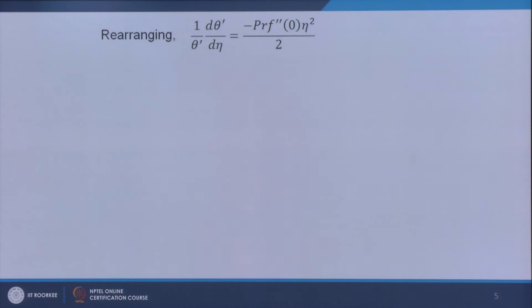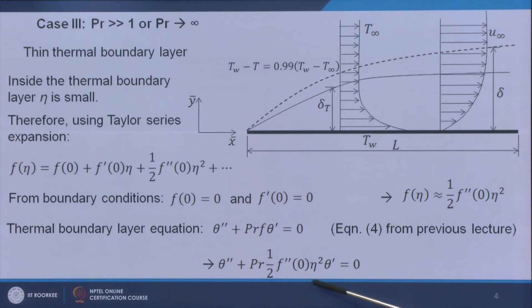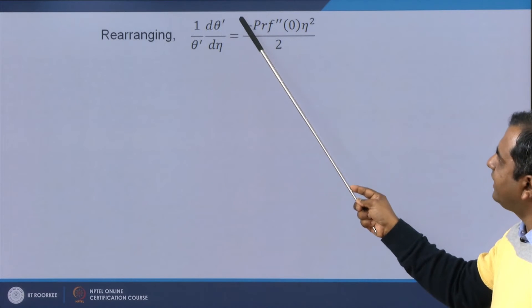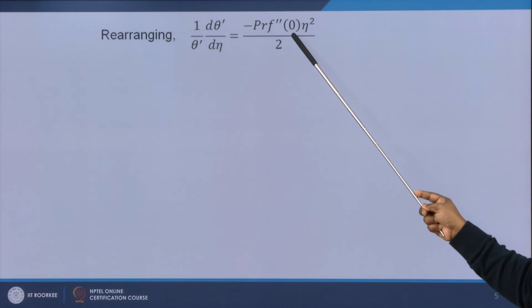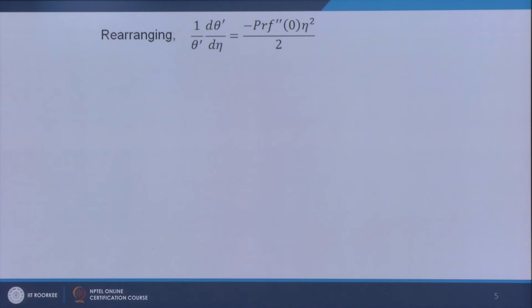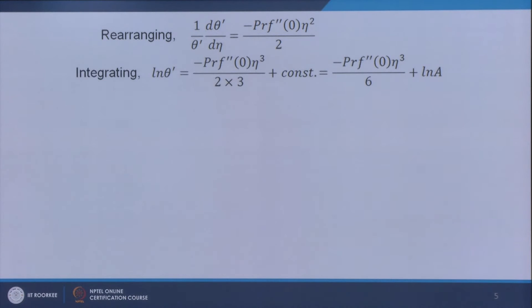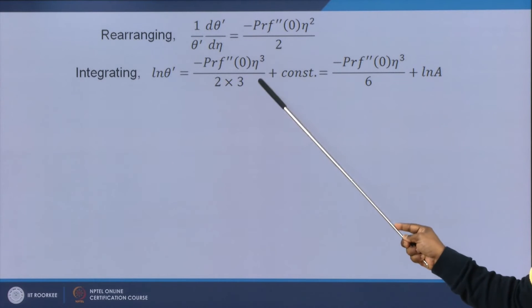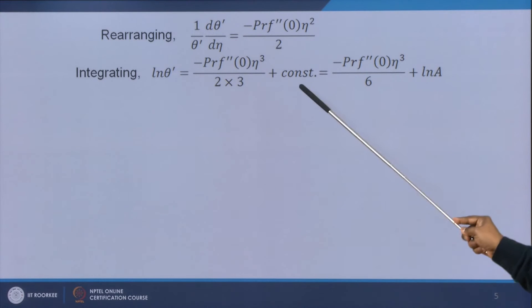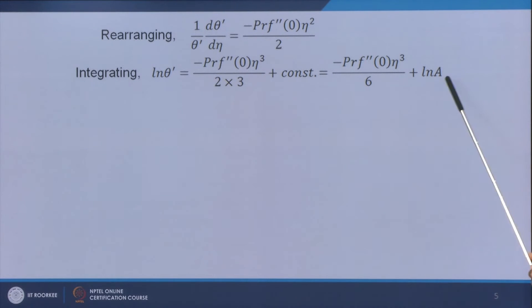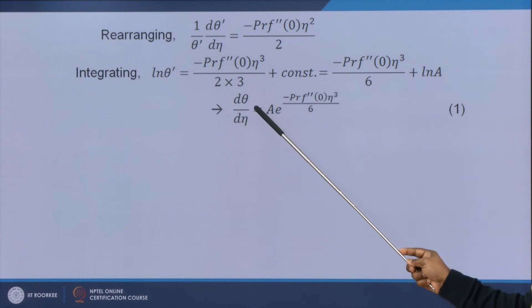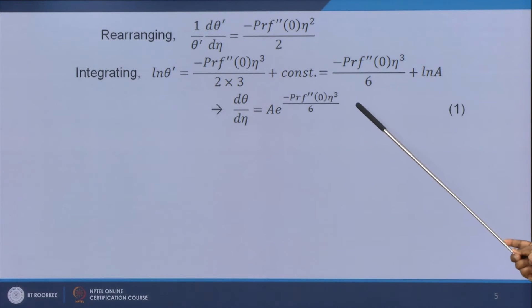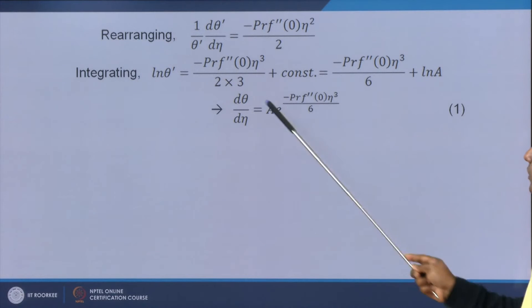Rearranging and integrating the equation, we write (1/θ')·dθ'/dη = −Pr·f''·η²/2. Integrating once gives ln(θ') = −Pr·f''·η³/6 + ln(a), where the constant is written as ln(a). Thus dθ/dη = θ' = a·e^(−Pr·f''·η³/6), where the factor 6 comes from 2 × 3.